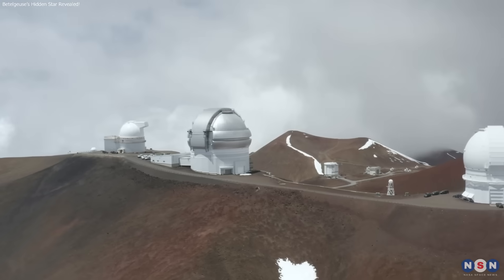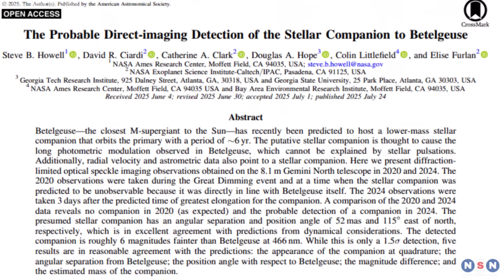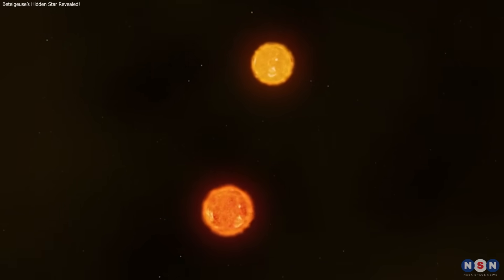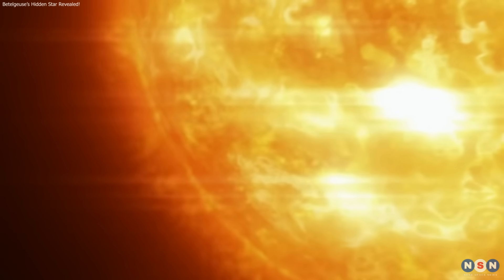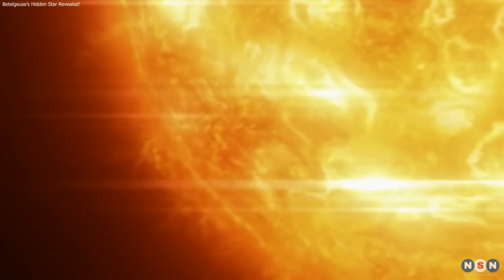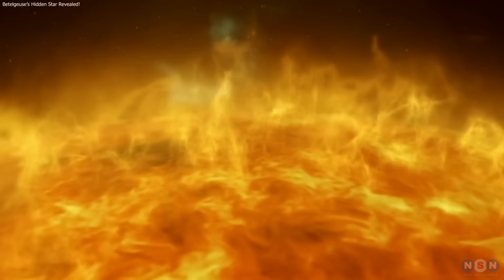Astronomers may have finally spotted Betelgeuse's long-suspected companion star, thanks to Gemini North's powerful imaging. While not yet confirmed, it's the strongest evidence that this red giant is part of a binary system, an answer we may get by 2027. It still holds secrets, and this discovery brings us closer than ever. Stay tuned with us for the next chapter in Betelgeuse's story.